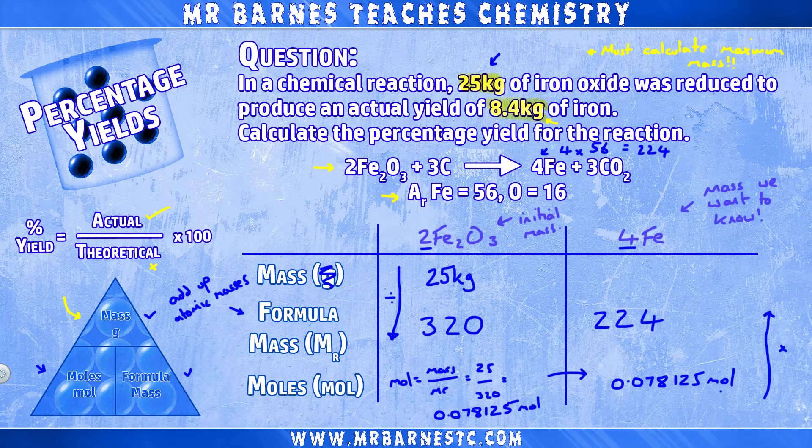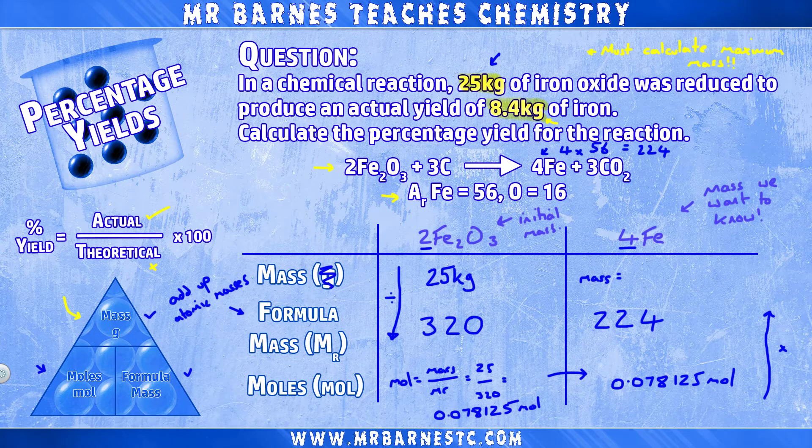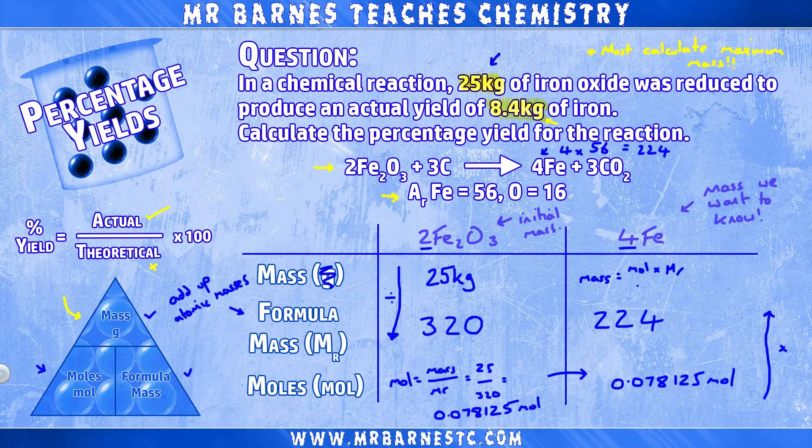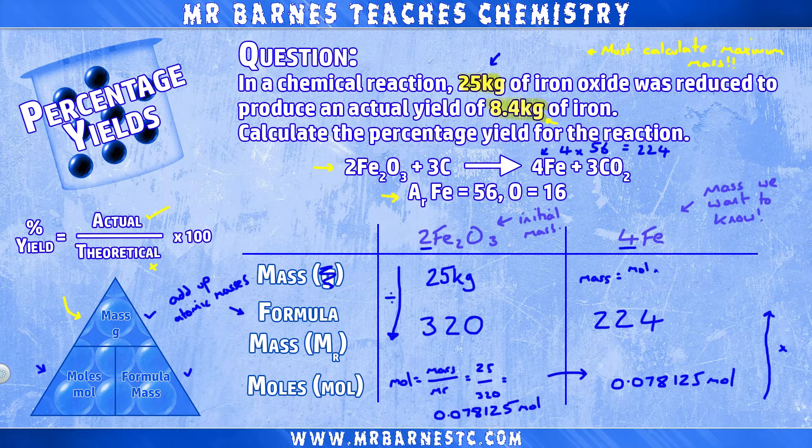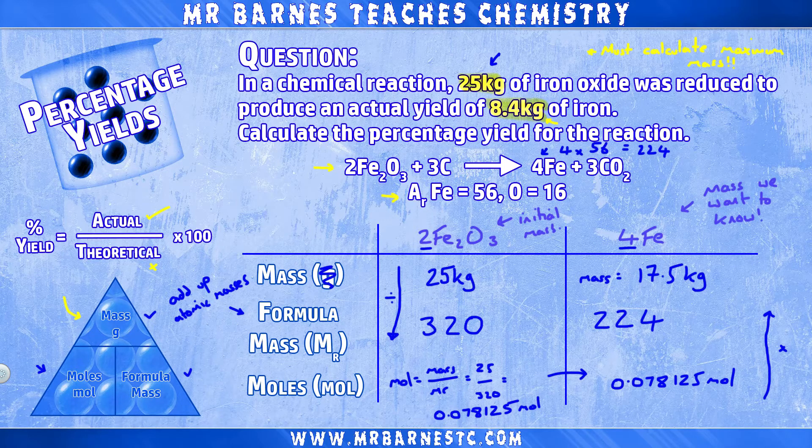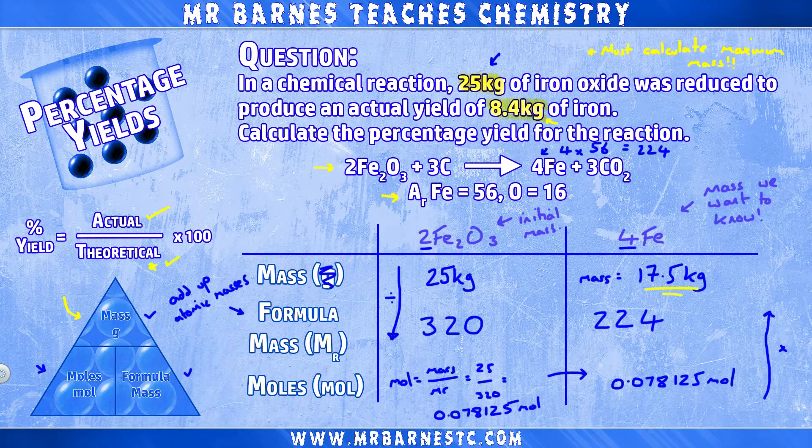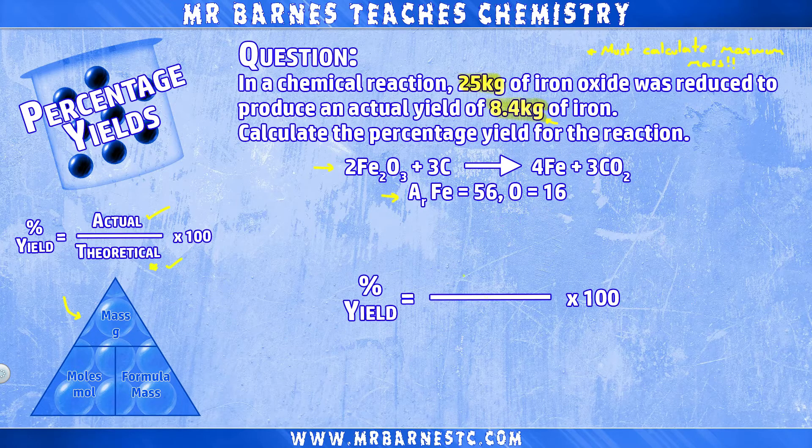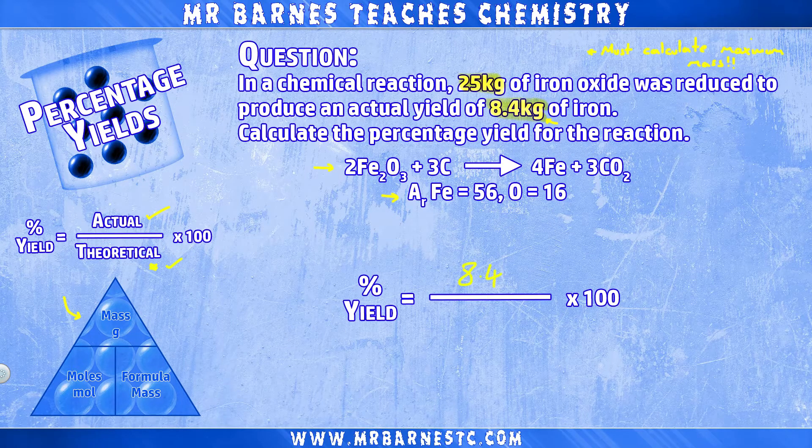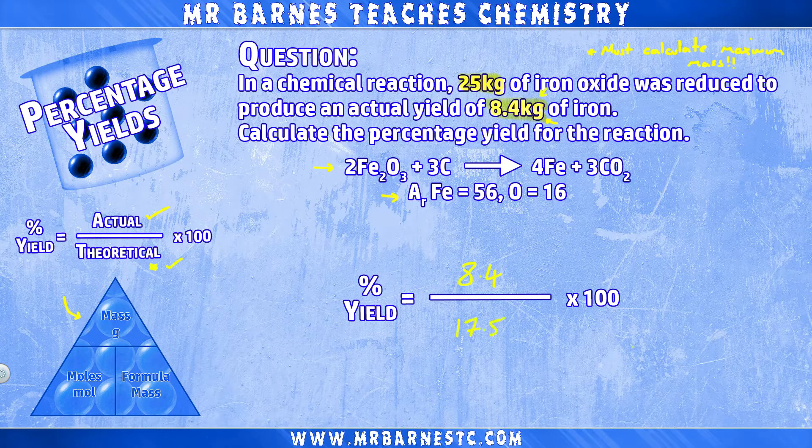So all that's left to work out our theoretical mass is to times the moles by the formula mass. So 0.078125 times by 224, giving me a theoretical mass of 17.5 kilograms. Now, all that's left is to go back to our original equation. We have the actual yield. We have the theoretical yield. So we can put that into our percentage yield equation, 8.4 divided by 17.5, which we then multiply by 100, giving us an answer of 48%.